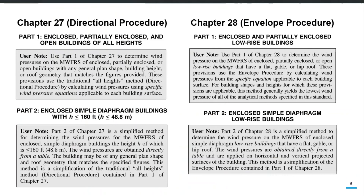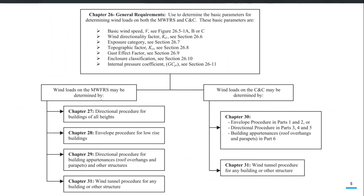Going back to the hierarchy of chapters in ASCE 7-16: Chapter 26 prescribes the general requirements, including what basic design wind speed to use. For the US, values and figures are provided, but national building codes of different countries provide guidelines for design wind speed applicable to their regions. This is one of the main input variables converted into design wind pressure. Chapter 26 also covers the wind directionality factor and other factors used in the empirical expression for design wind pressure.